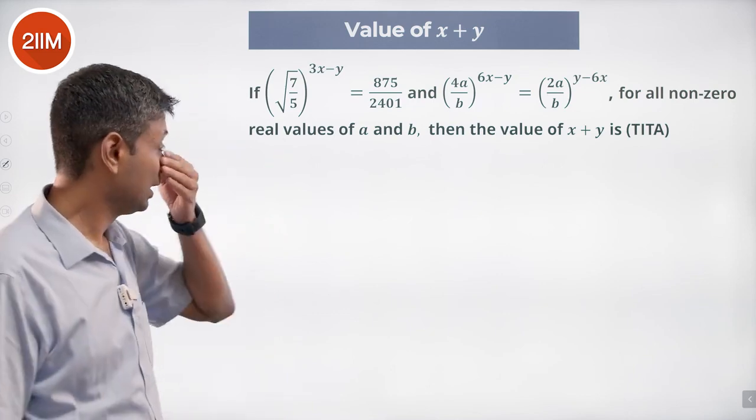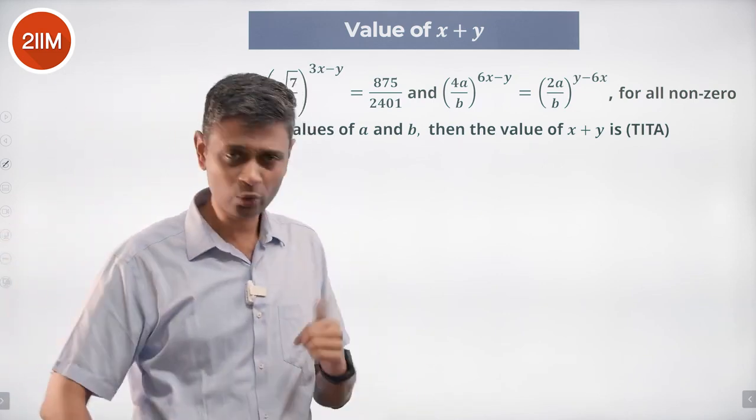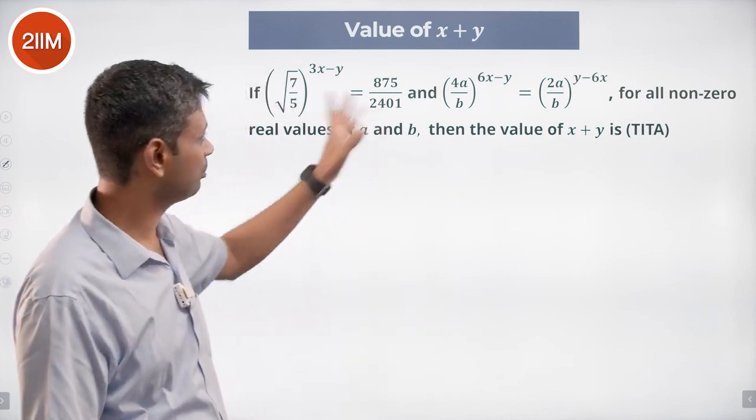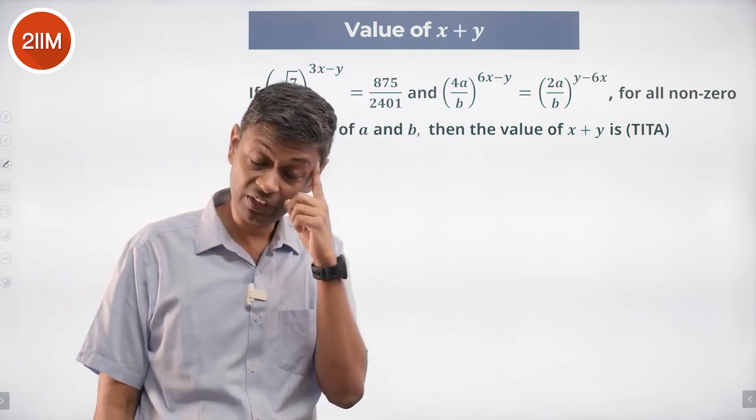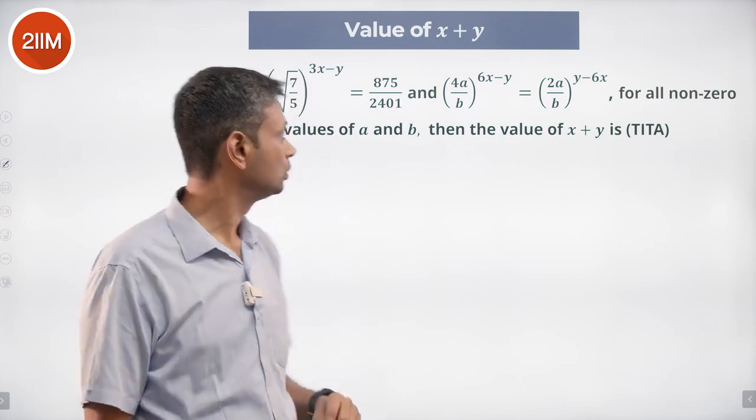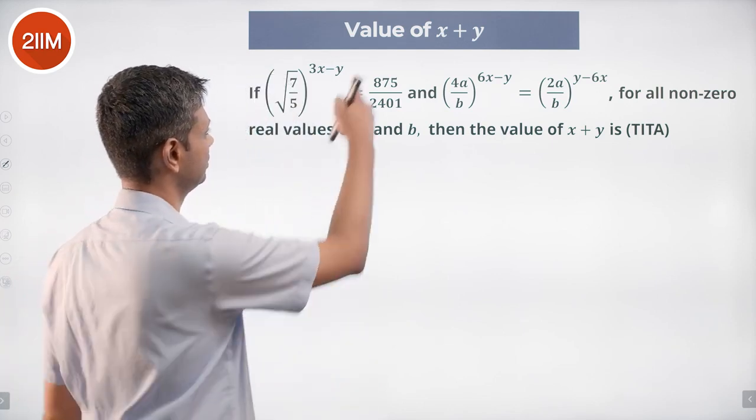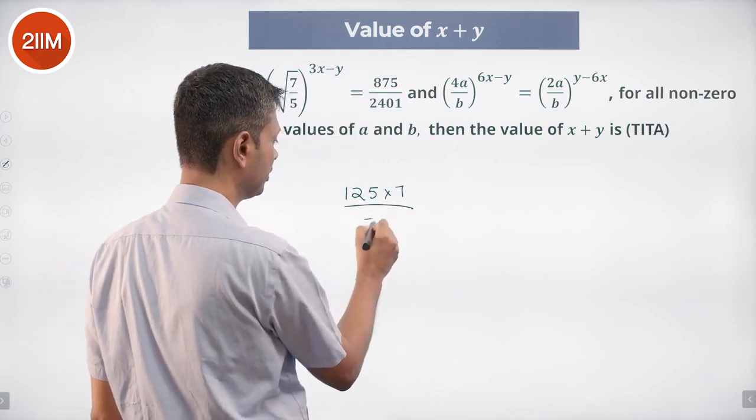So this I know 2401 is a power of 7. That really helps. 49 square is 2401, so this is 7 power 4. I was looking for this being a power of 5 which it was not. But 875 I know is 1000 into 7 by 8. So this number can be written as 125 into 7 by 7 power 4.